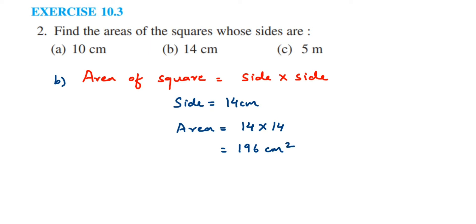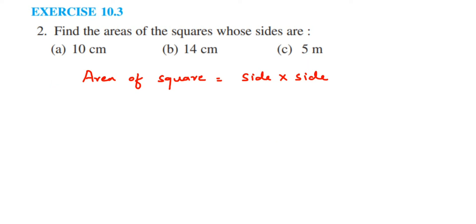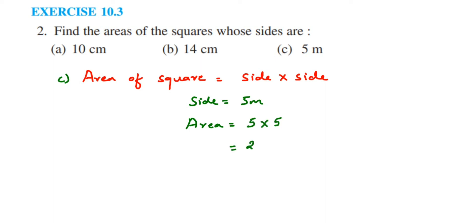For the third one, the side is 5 meters. So side is equal to 5 meters. Area will be equal to 5 multiplied by 5, which is 25. We get 25 meter square.